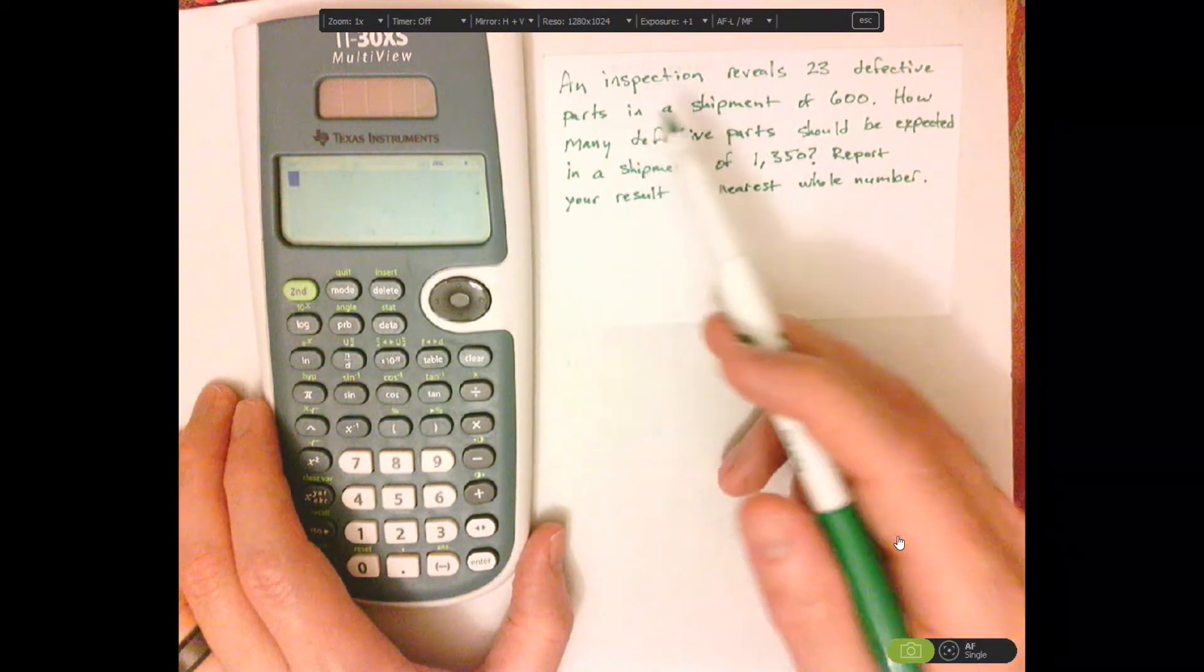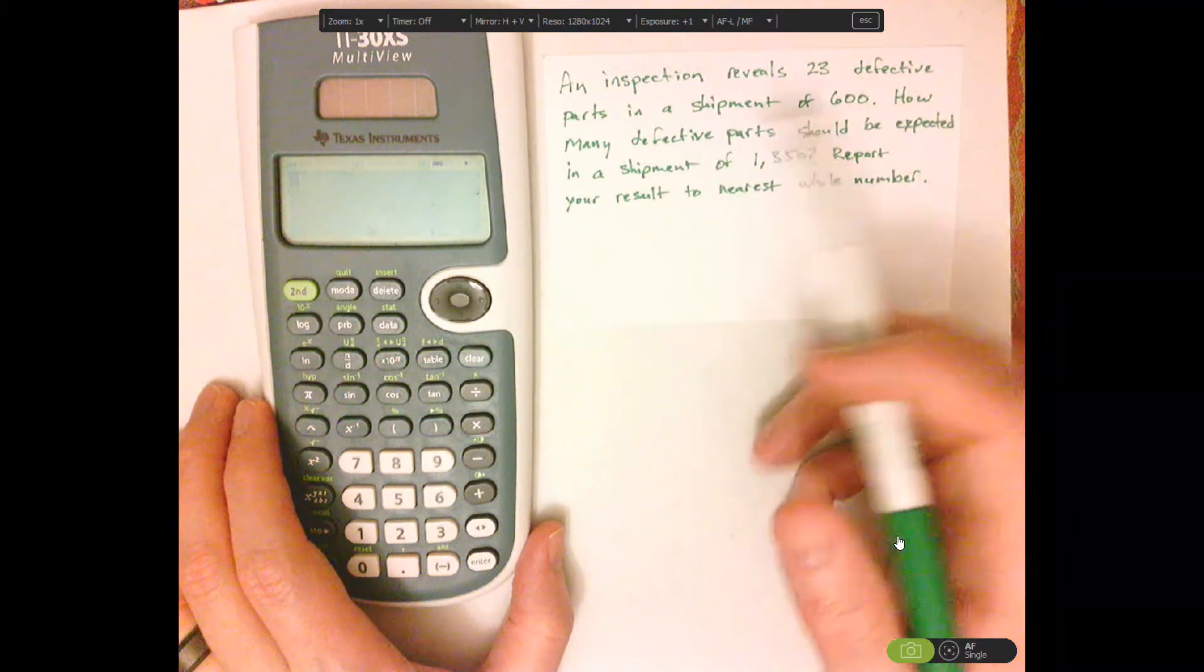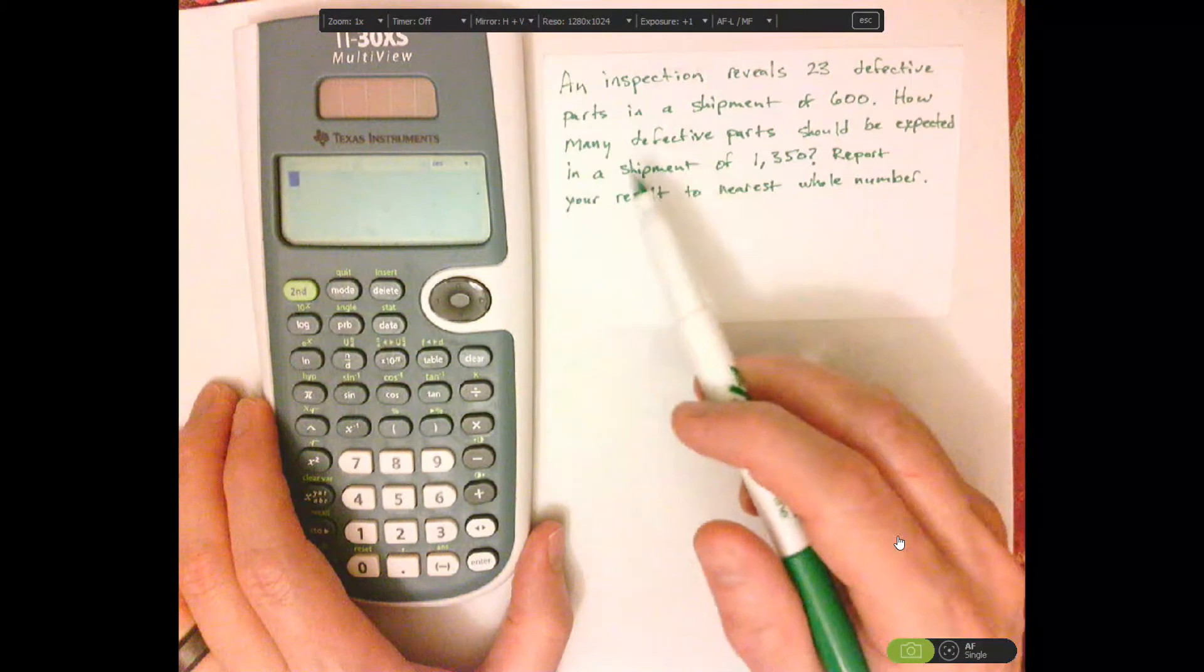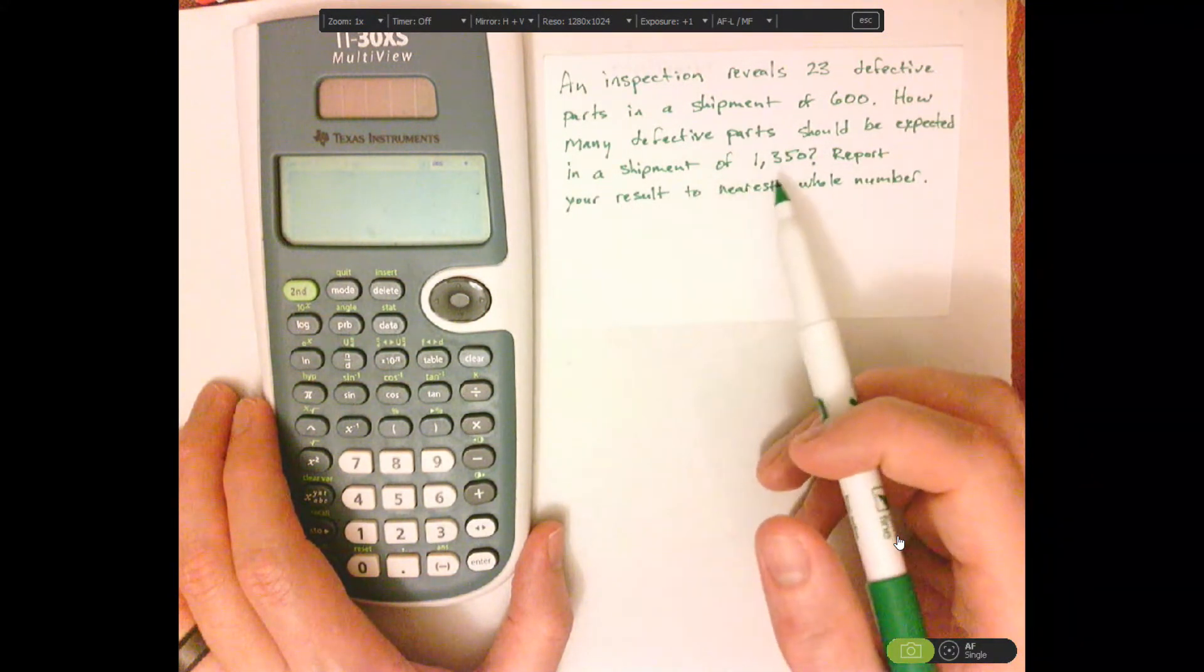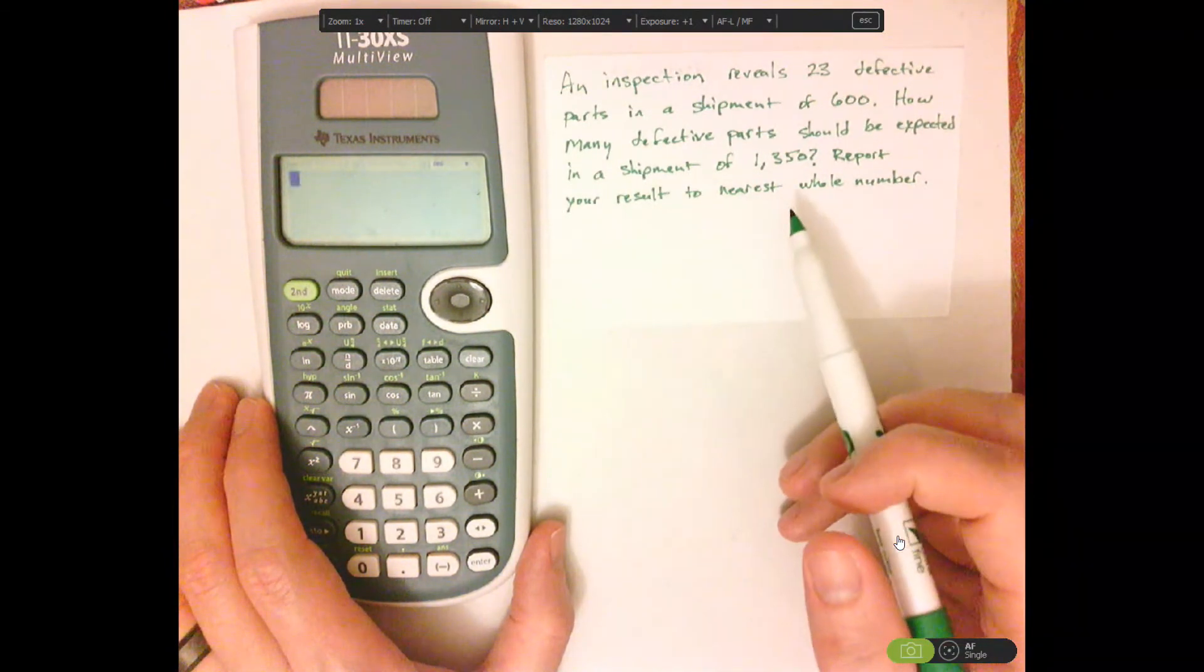Let me read the problem. An inspection reveals 23 defective parts in a shipment of 600. How many defective parts should be expected in a shipment of 1,350? Report your results to the nearest whole number.